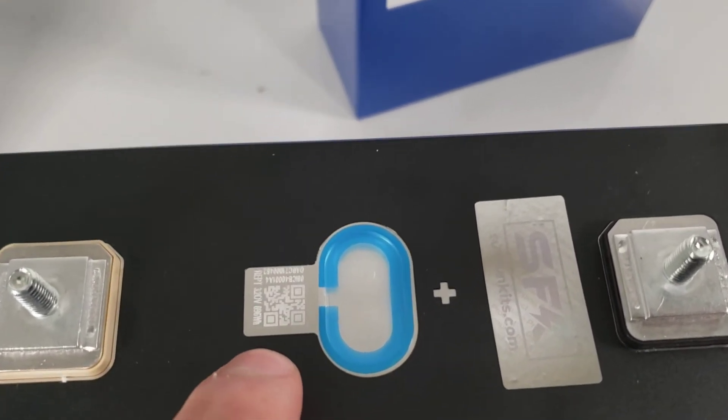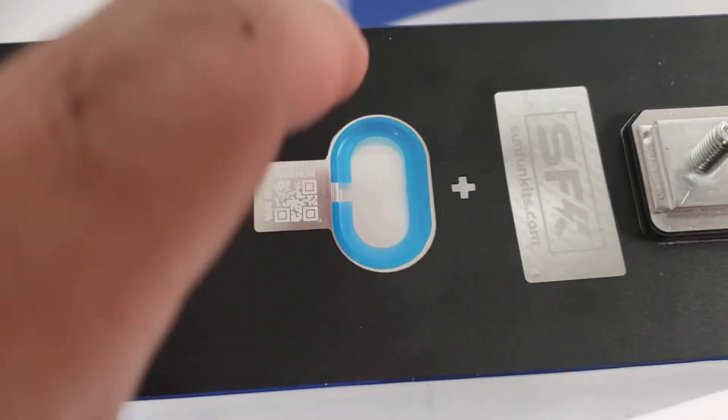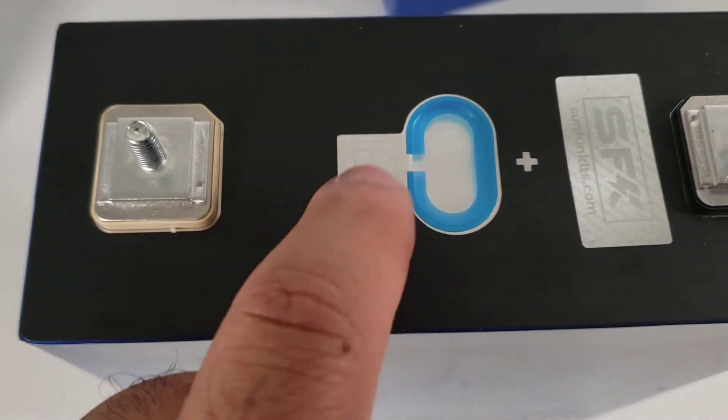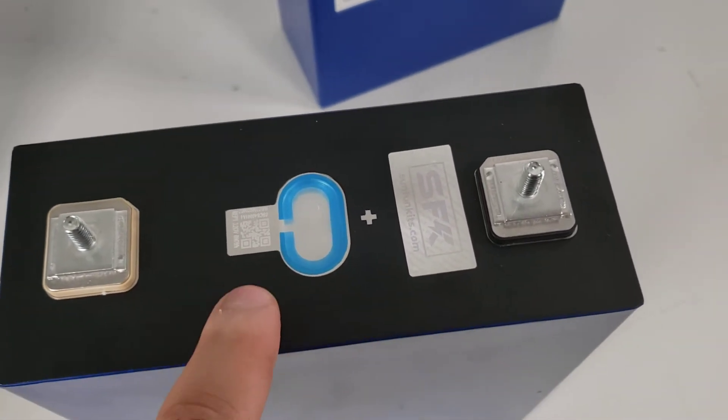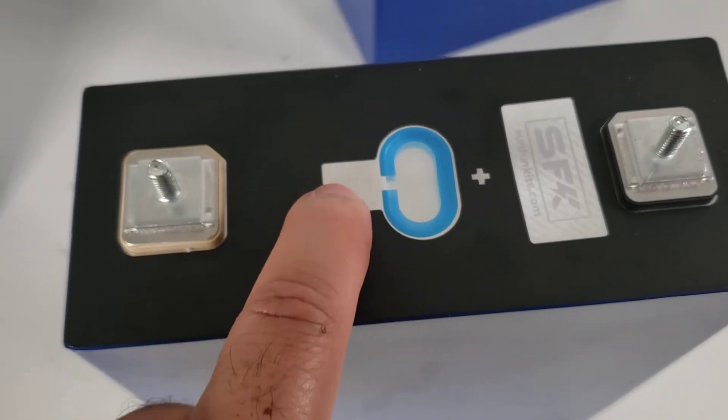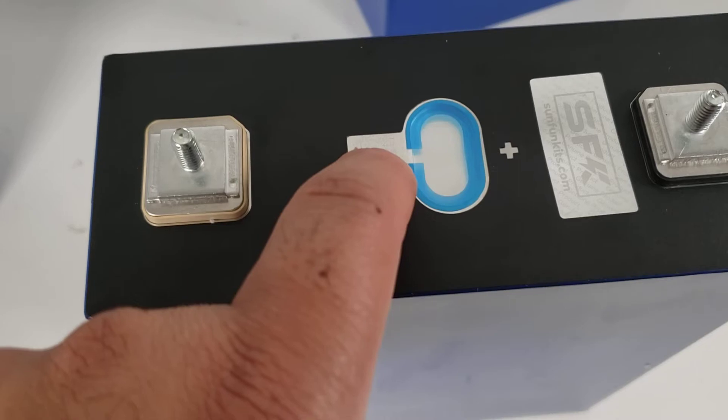Now, one thing to note. Genuine R-E-P-Ts have their QR code over here. Not the fake ones, which put a little fake QR code here and cover here. I know a lot of people are going to be like, well, I've seen R-E-P-Ts for very cheap. If the QR code is not there, it is a grade B reject. If it's here, that's grade B reject. It must be here.